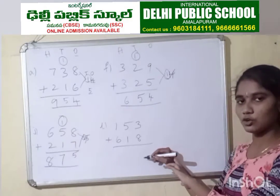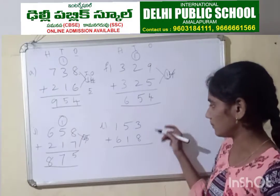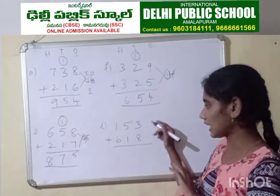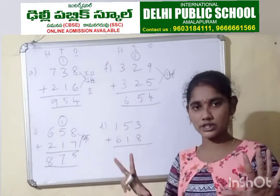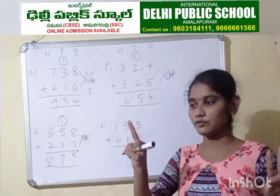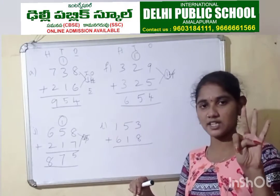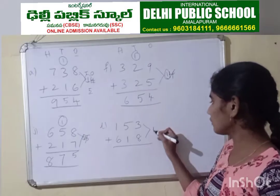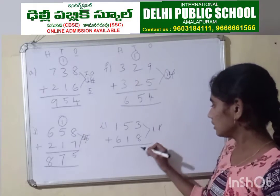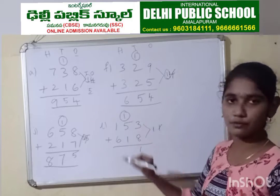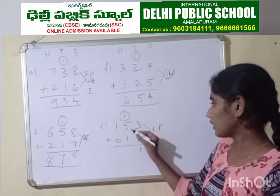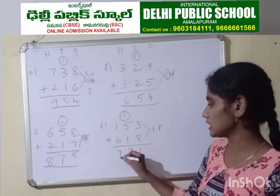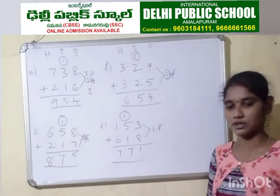Pause the video, do the problem, then check your answer. 3 plus 8: keep 3 in mind, take 8 fingers. Count up: 4, 5, 6, 7, 8, 9, 10, 11. We got 11. So write 1 here and 1 as a carry forward. Then 5 plus 1 is 6, and 6 plus 1 is 7. Then 6 plus 1 is 7. So the answer is 771.